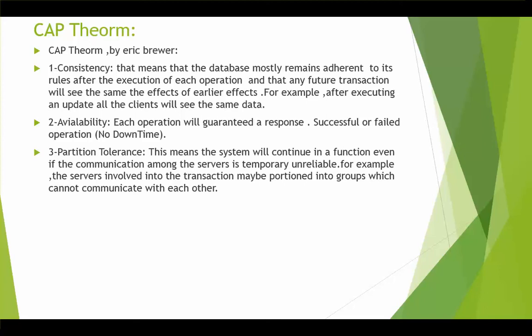For example, after executing an update, all the clients will see the same data. Number 2, availability means that each operation will guarantee a response — either a successful or failed operation — with no downtime.